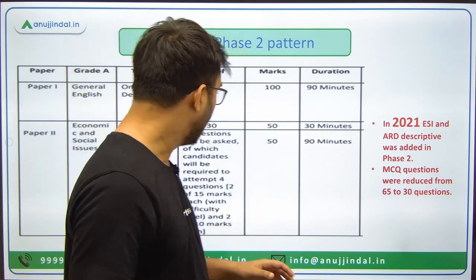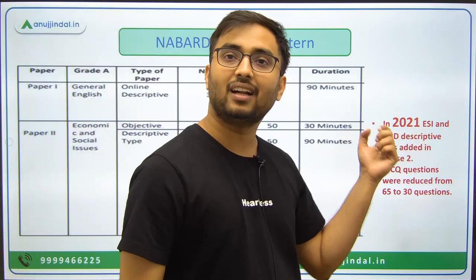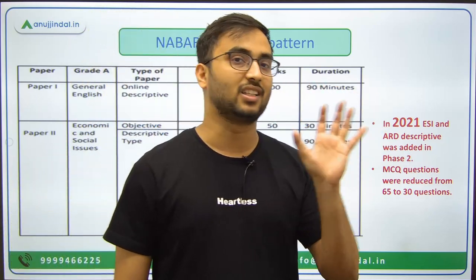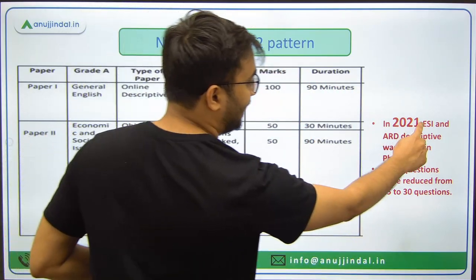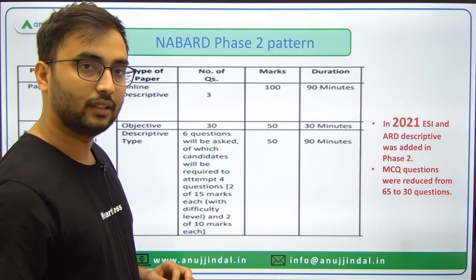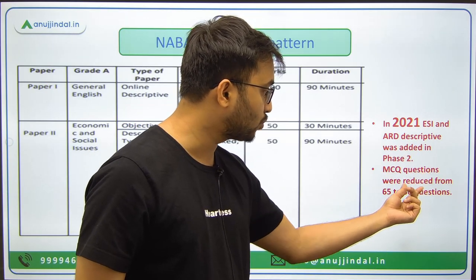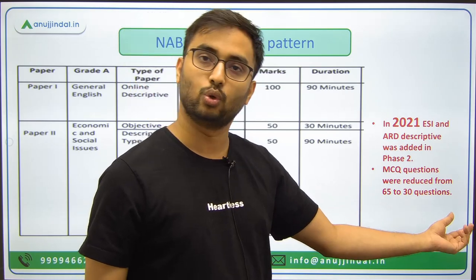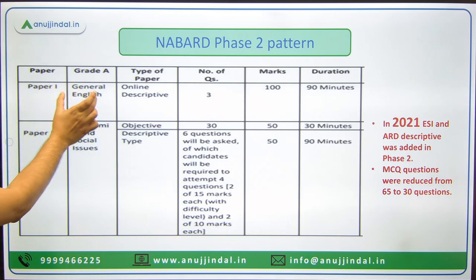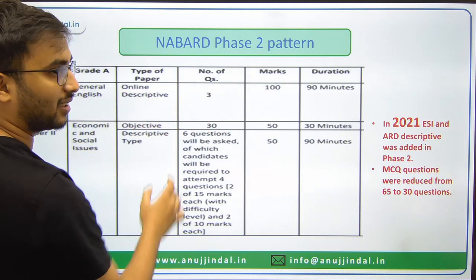What changed in 2021 was significant. Before 2021, in 2018, 2019, and 2020, ESI and ARD MCQs were 65 in number. But in 2021, ESI and ARD descriptive answer writing was also added in Phase 2. Therefore, the total ESI and ARD MCQ questions were reduced from 65 to 30 questions.